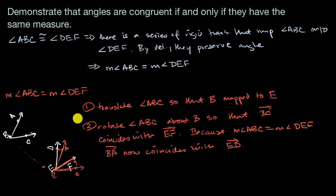And just like that, I've given you a series of rigid transformations that will always work. If you translate so that the vertices are mapped onto each other, and then you rotate it so that the bottom ray of one angle coincides with the bottom ray of the other angle, then the top ray of the two angles will now coincide, because the angles have the same measure.